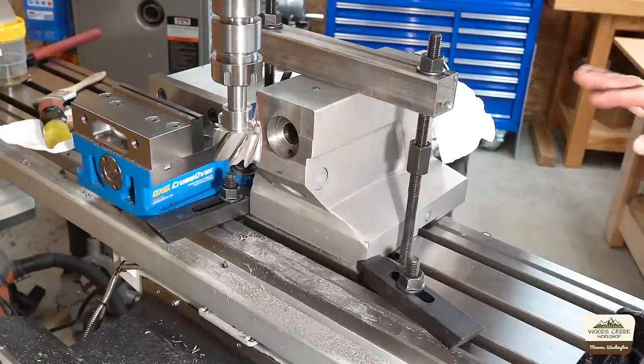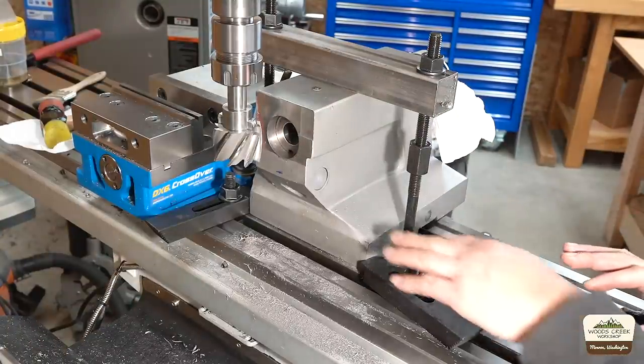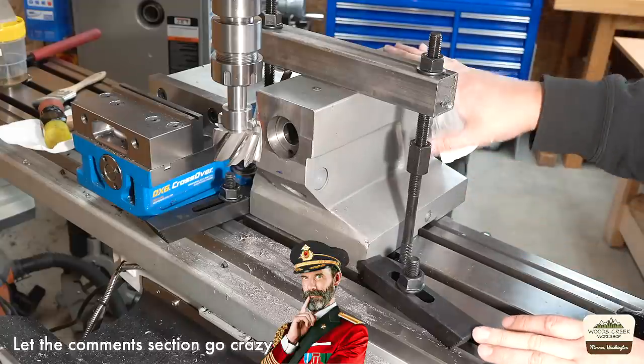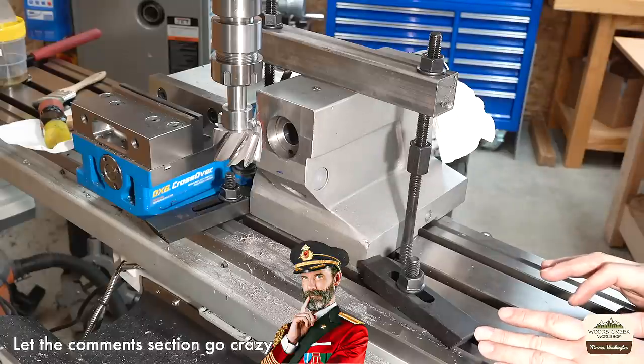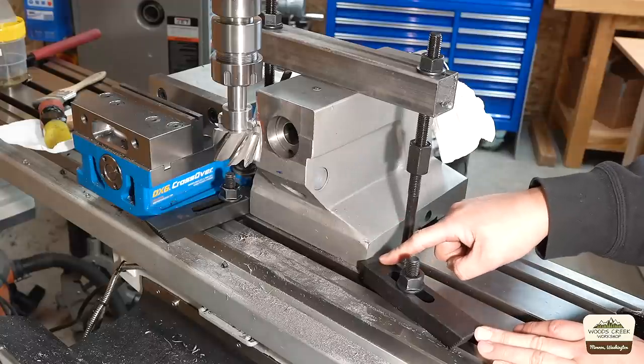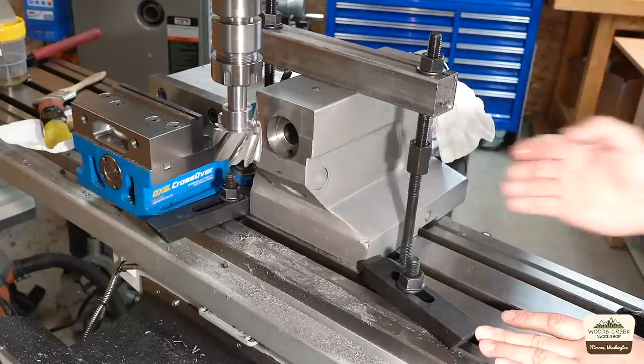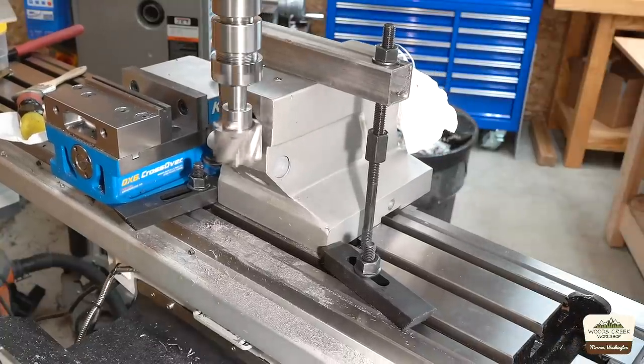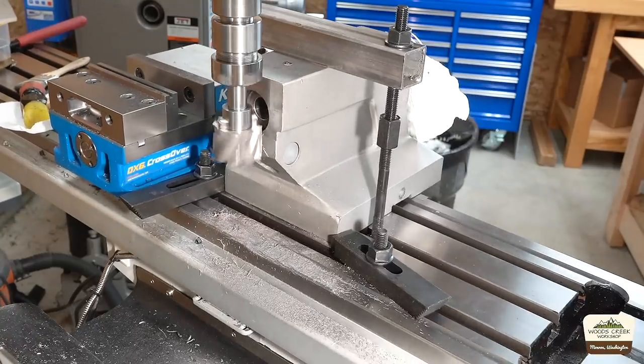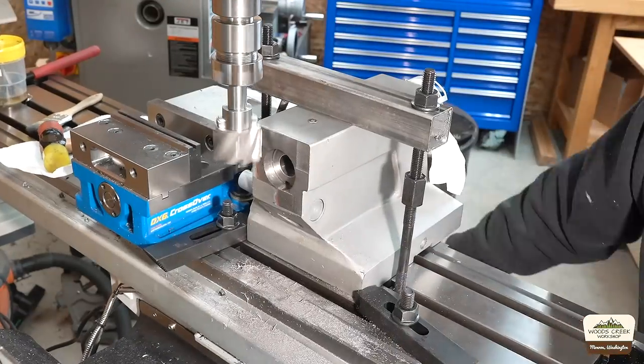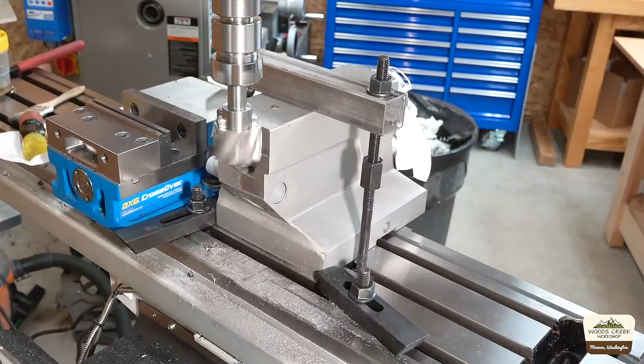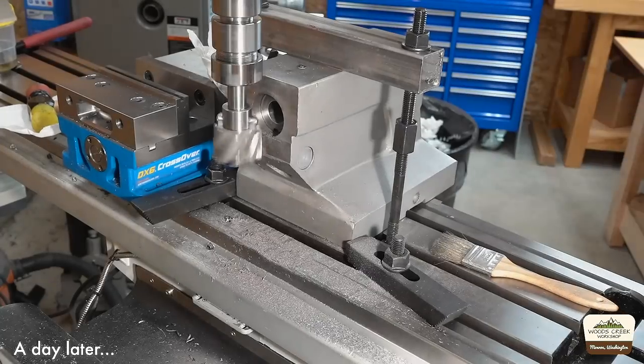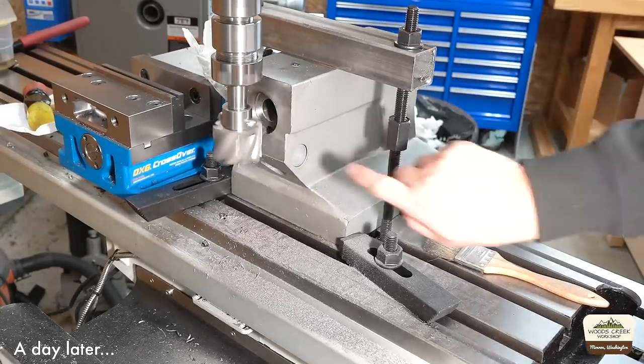Alright guys, something didn't feel right. So I stopped and ran the indicator again. And the tailstock had moved. So there really is no good way to do this. At least with given limited number of hold downs I have. But I added hold downs here and down at the end to prevent it from slipping. That should do it.